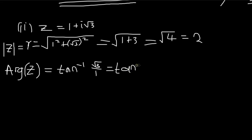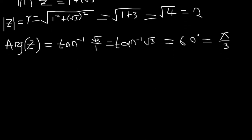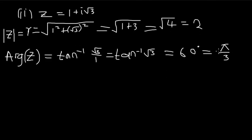tan⁻¹(√3) gives us 60 degrees, which can also be written in radians. Since 60/180 = 1/3, we get θ = π/3. So this is the argument of z. On this second part, let me use radians so you get used to both forms.